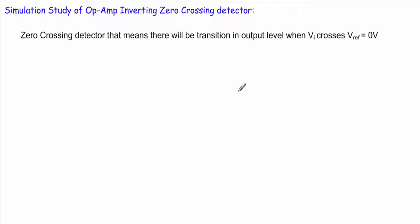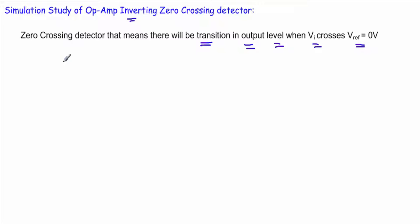In this video I'm going to show you the simulation study of an operational amplifier in the inverting zero crossing detector. Zero crossing detector means there will be a transition in the output level when the input voltage crosses the reference voltage, which is zero volts.